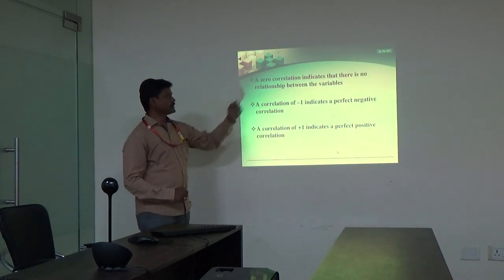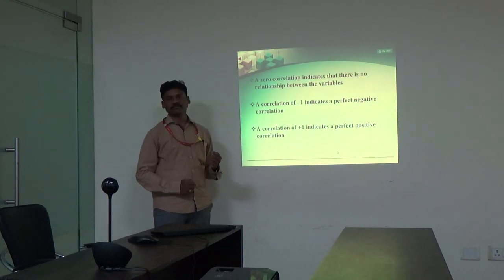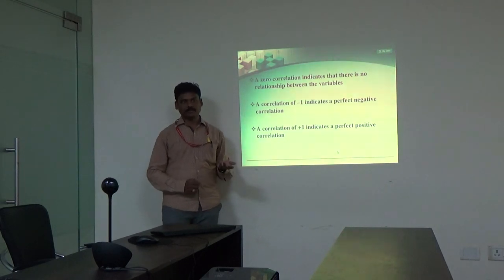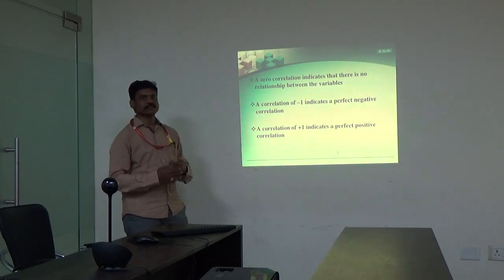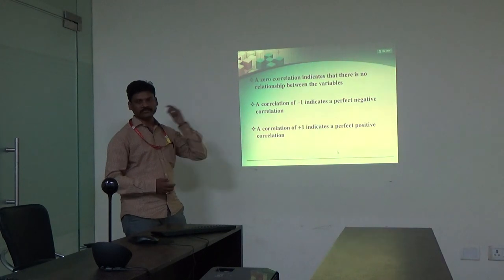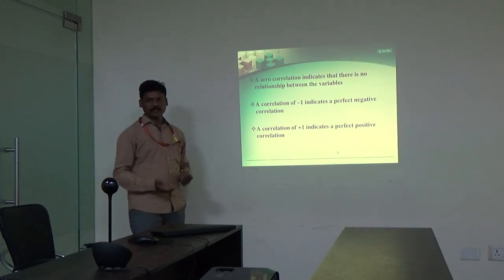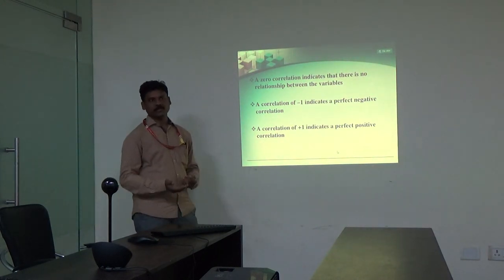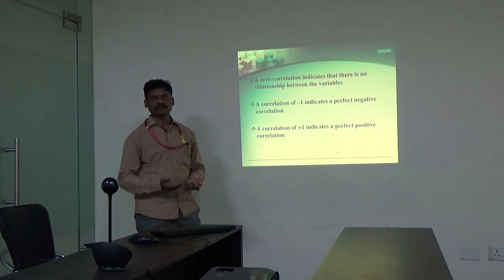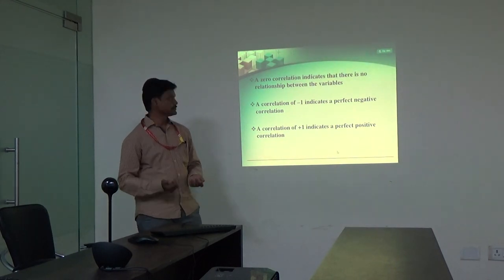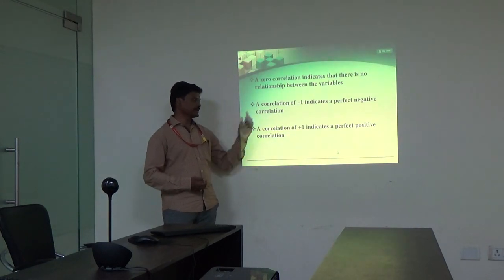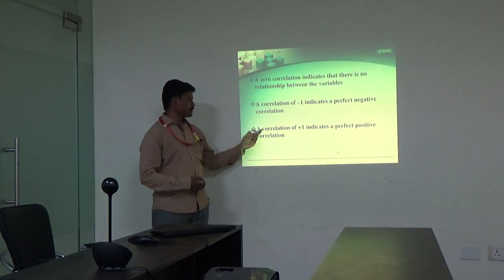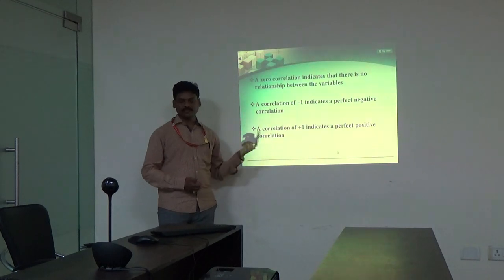A zero correlation indicates that there is no relationship between the variables at all. We cannot predict that if variable one changes, how does variable two change — it is impossible to predict because both of them are independent variables. For example, names of people have no relation with their other parameters. A correlation of minus one is a perfect negative correlation, and a correlation of plus one indicates a perfect positive correlation.